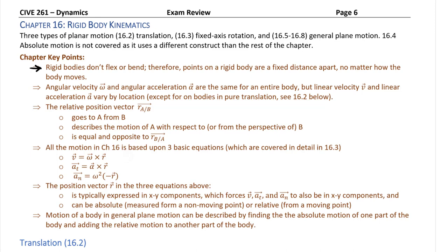As we look at position vectors, we use the letter R and the notation 'A slash B.' This means A relative to B, meaning that the position vector goes to A from B — you can think of it as 'to slash from.' If we want the opposite direction of this relative position vector, we put a negative out front, and that's going to switch it from going to A from B, to going from A to B — it just flips it around.